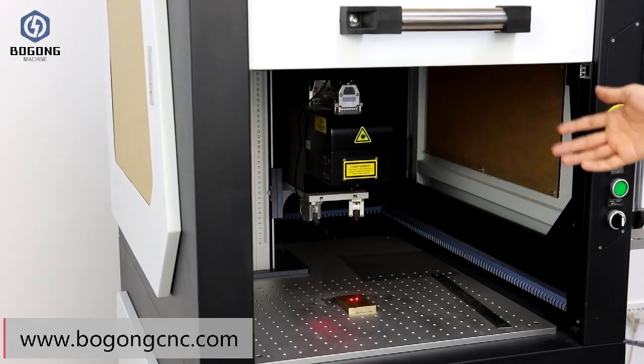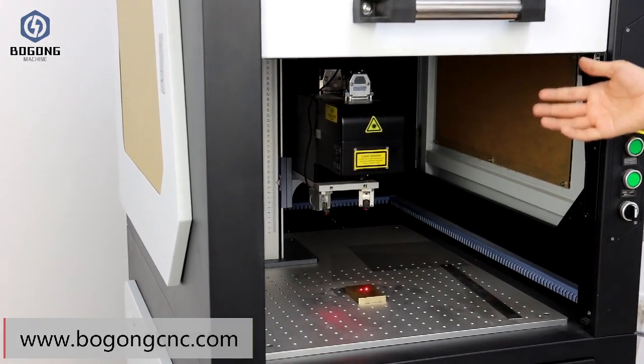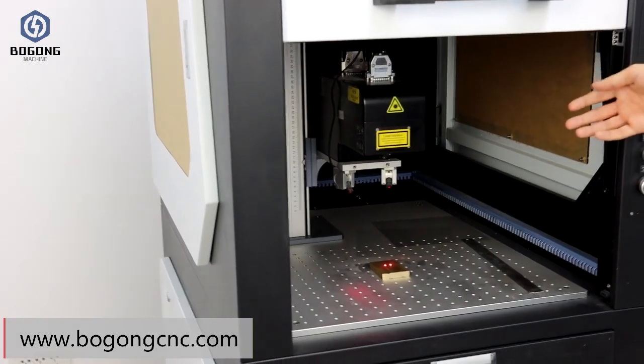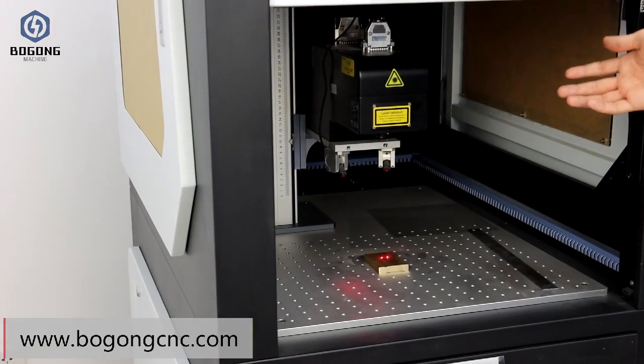It includes columns, galvanometers, working benches, computer displays, and double red light. It helps us to confirm light focus.